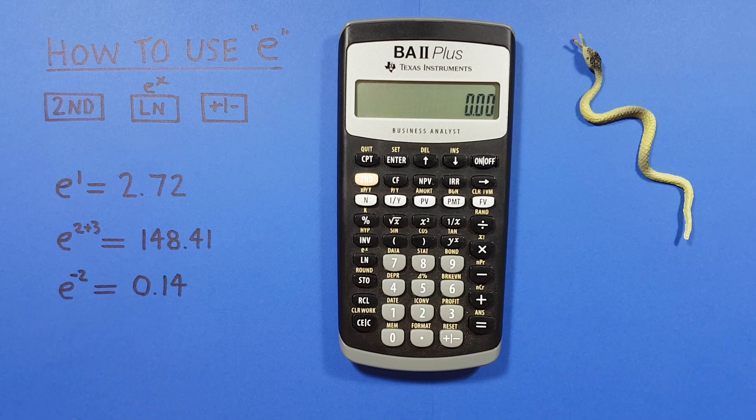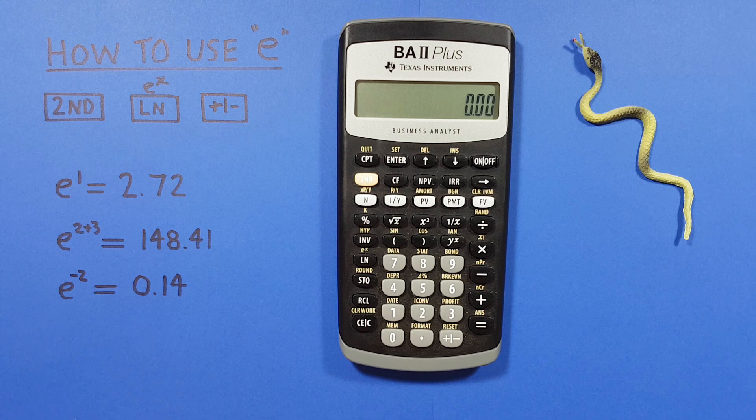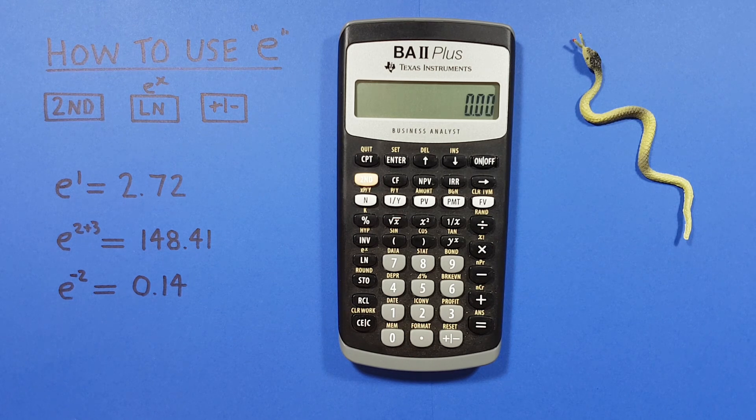Hello and welcome to HD Calcs. I'm Rick and in this video we're going to have a look at how we can use the constant e, also known as Euler's number or natural antilog, on the Texas Instruments BA II Plus business calculator.